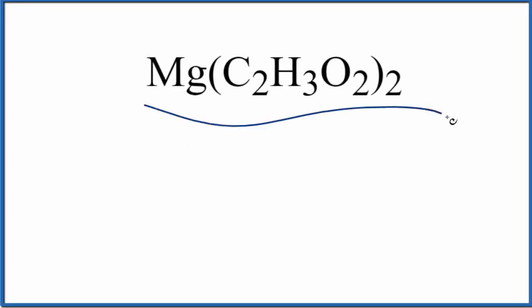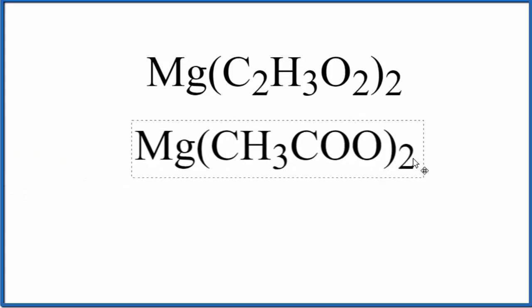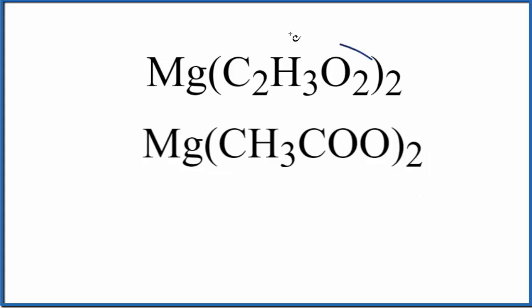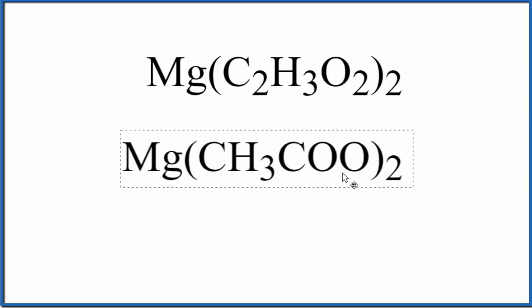Let's write the name for Mg(C₂H₃O₂)₂. We could also write this like Mg(CH₃COO)₂. It's the same thing. This is the acetate ion here, and this is just another way to write the acetate ion. So let's write the name using the formula on top.